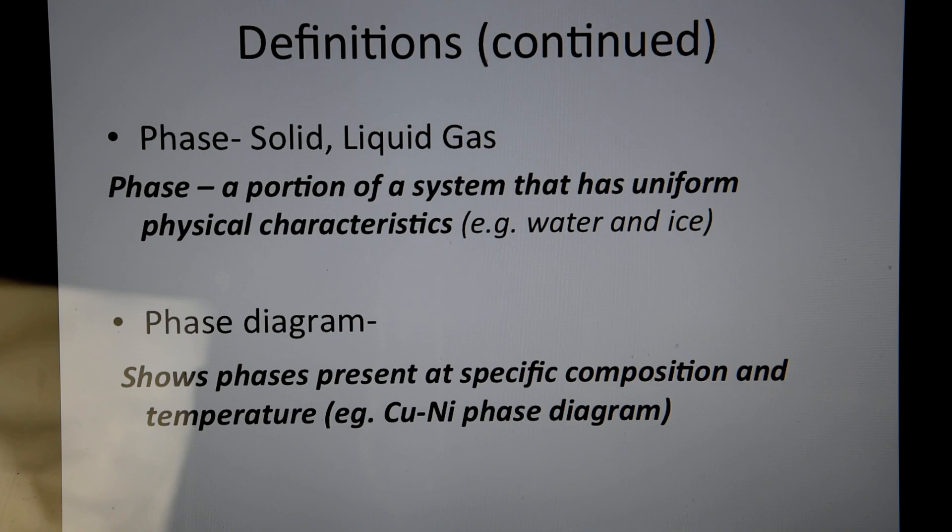Now a phase is basically solid, liquid or gas. The main definition for a phase is a portion of a system where you have uniform physical and chemical composition or characteristics.